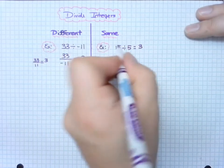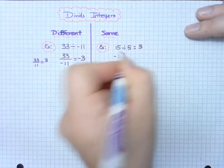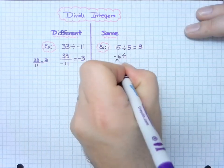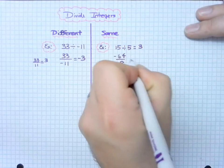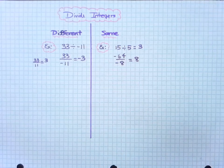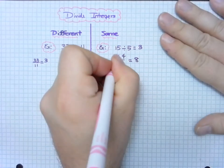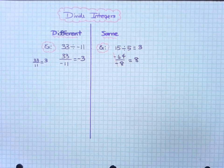But again, just like multiplication, if we have a negative number divided by a negative number, that's going to be positive. Notice how by setting it up like that, we can show that they cancel out.